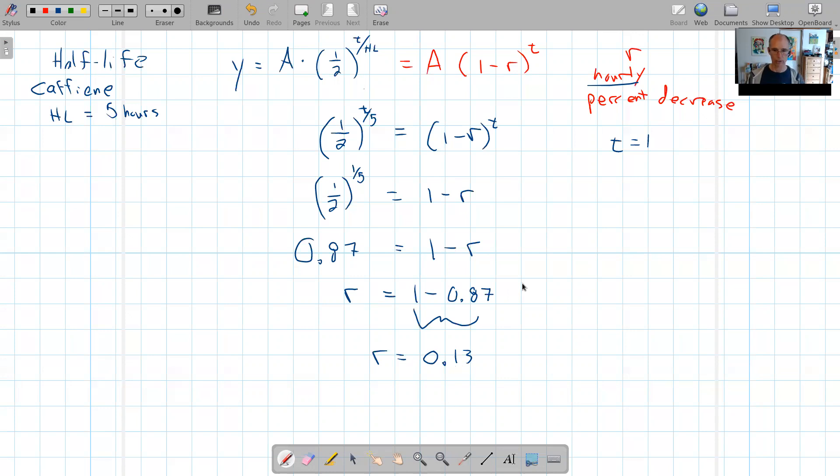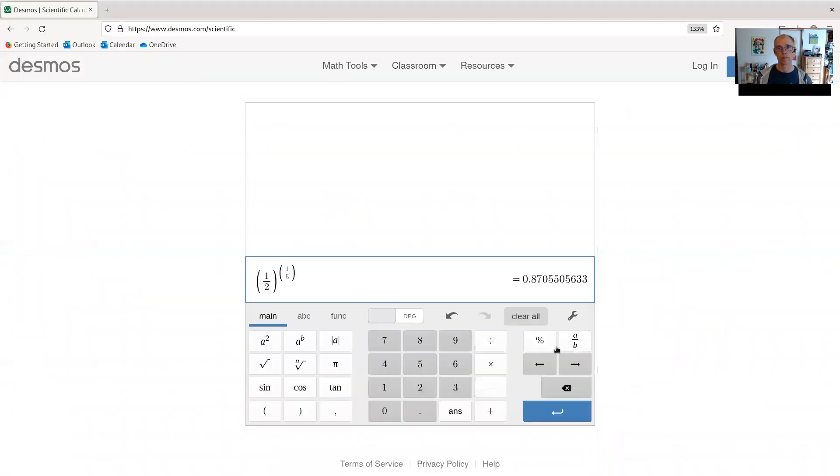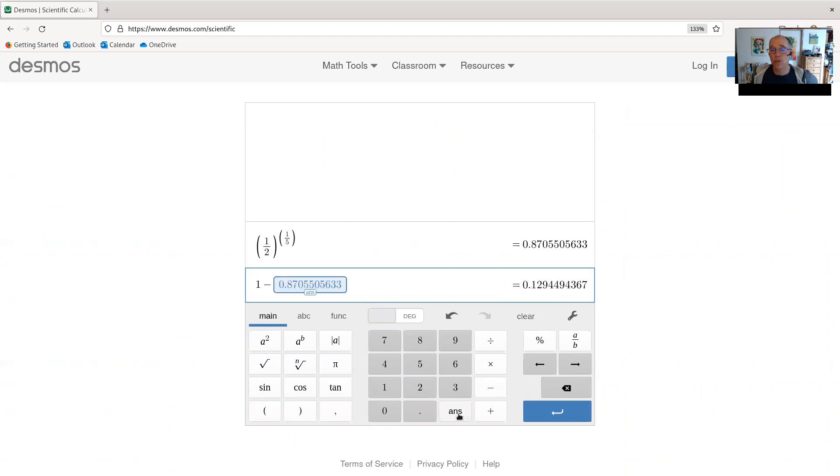Hey, we've got a calculator. Let's double check. And one cool thing about most calculators is I don't have to retype that number because I can just do one minus that previous answer, and I get 0.12944, which I rounded to 0.13 because above I rounded to 0.87. So if you need more decimal places, there they are.